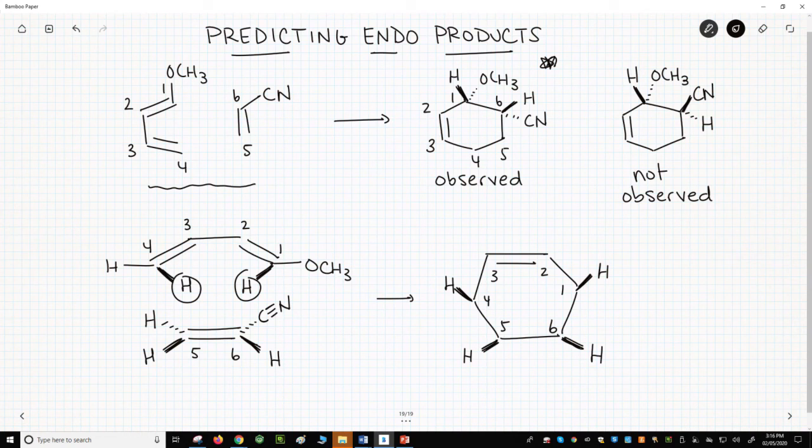The final bonds to these carbons must all be down. Those are hydrogens for 4 and 5. Then the nitrile for C6 and the OCH3 for C1. That's our product. It's the same as what we've shown at the top of the slide, just rotated a little bit.